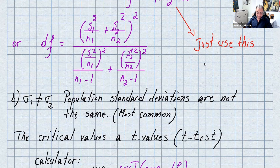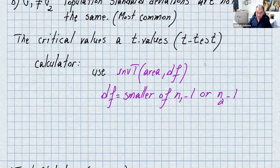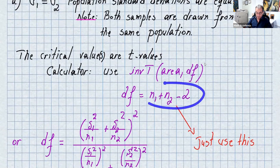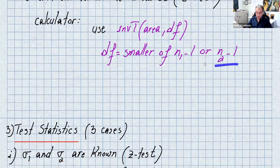Case B: sigma1 is not equal to sigma2 — population standard deviations are not the same. This is the most common case. Remember, if the problem does not mention that they're equal, you're dealing with this case. It's also a t-test. The degrees of freedom here are the smaller of n1 minus 1 or n2 minus 1 — different from Case A, which used n1 plus n2 minus 2.